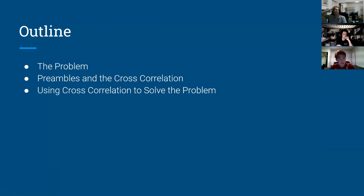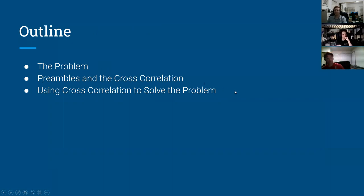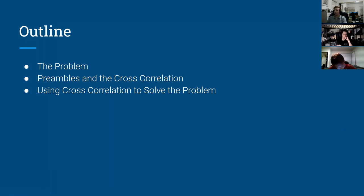Today's outline: first is the problem — packet synchronization — and then we have the solution, which is adding preambles and using cross-correlations to detect packets. Essentially, we're doing cross-correlations to detect packets and synchronize the receiver with the transmitter.